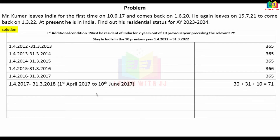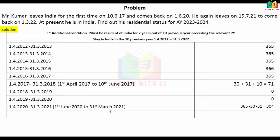For year 19-20: from 1st June 2020, that is June, July, August, September, October, November, December, January, February, March — approximately 304 days in India. For year 21-22: he leaves on 15-7-21 and returns on 1-3-22. April to July 15 plus March 1 to March 31 gives approximately 137 days.